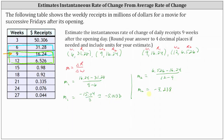These values represent the slopes of the secant lines through the given points, and also the average rate of change of receipts per week over each time interval. So negative 5.0133 means the daily receipts decreased at an average rate of 5.0133 million dollars per week from week six to week nine, and negative 3.238 million dollars per week from week nine to week twelve.